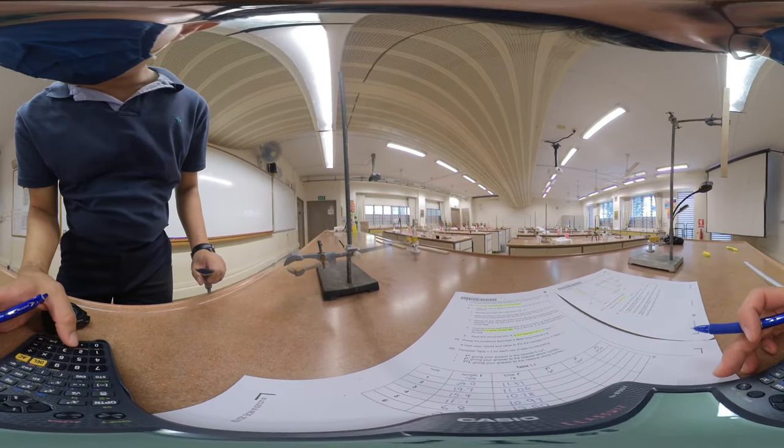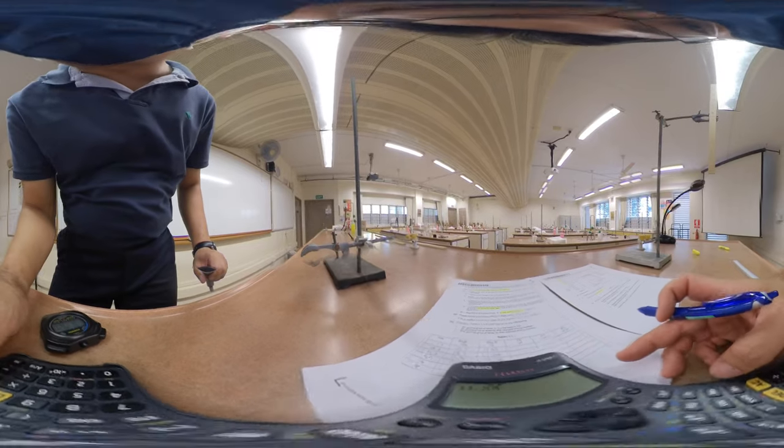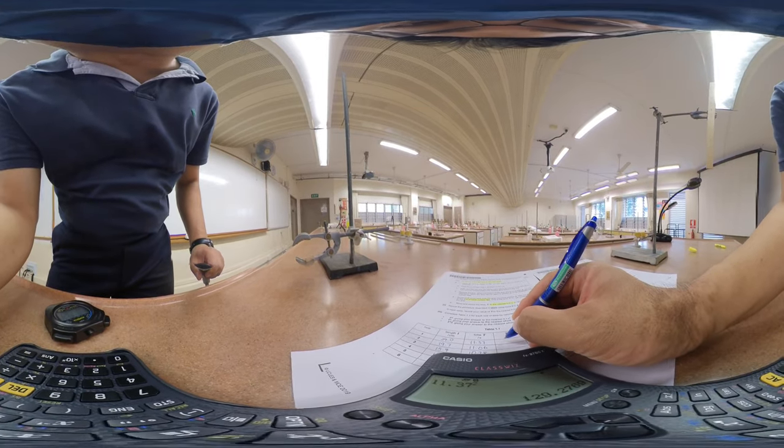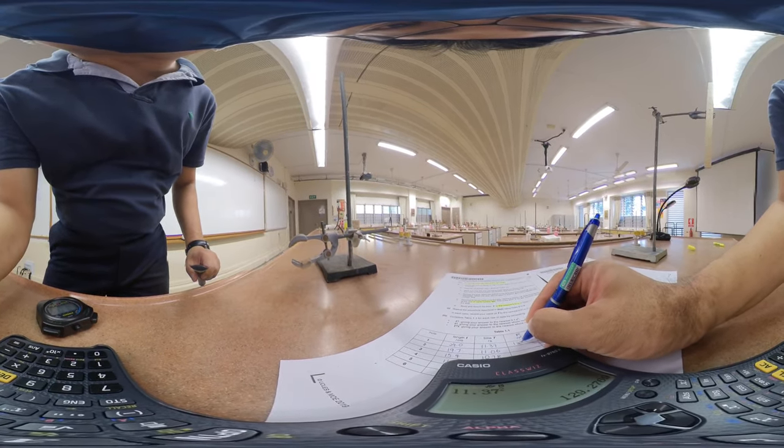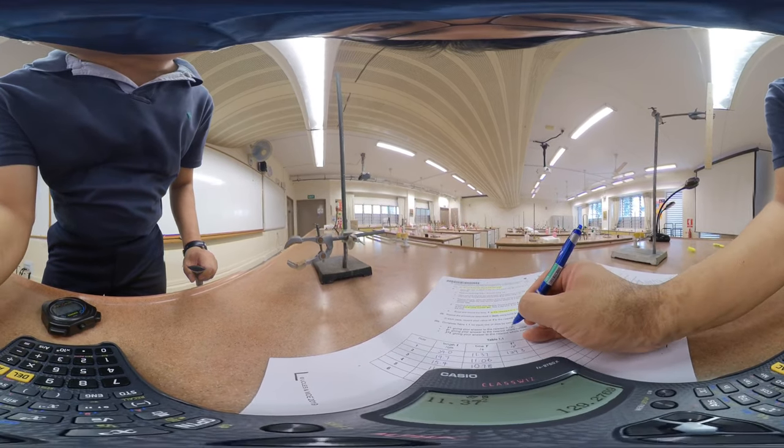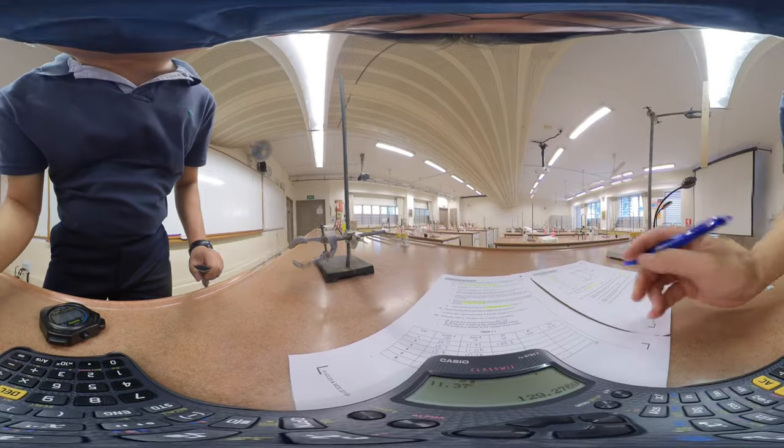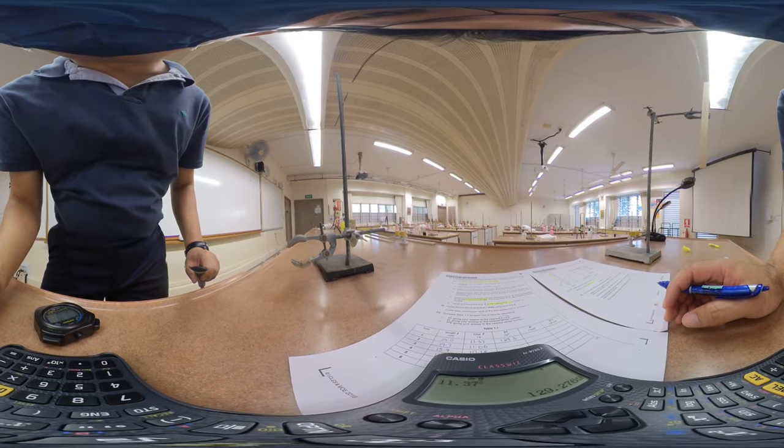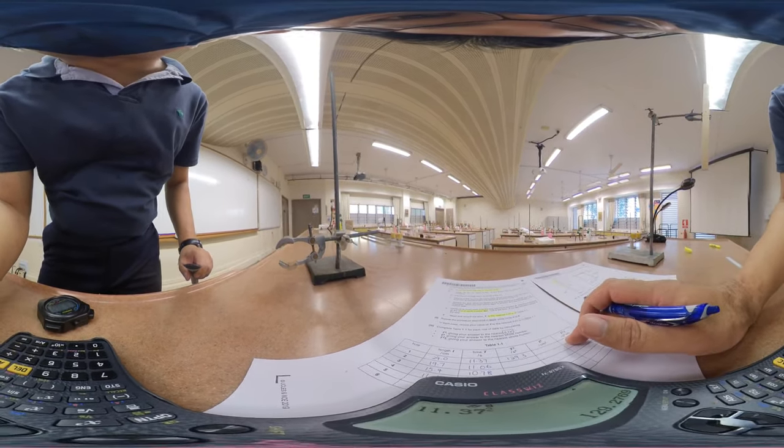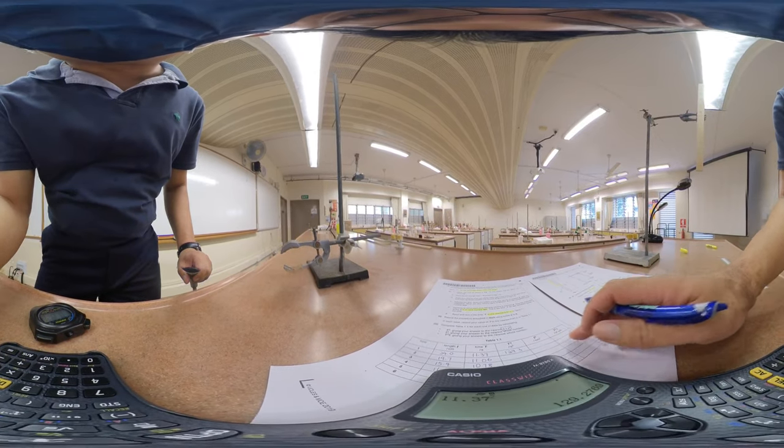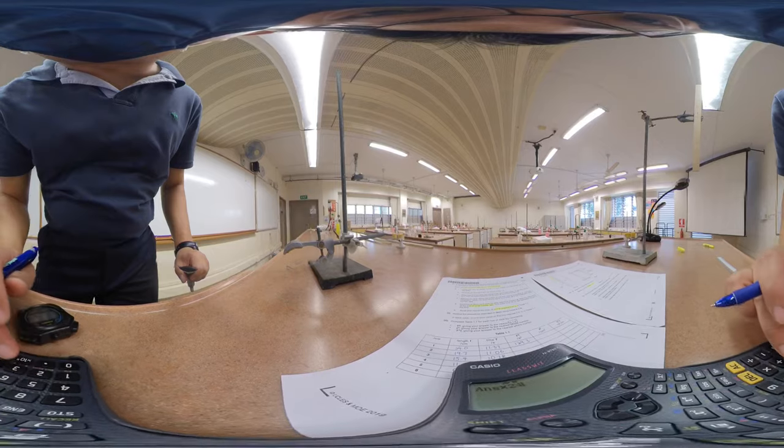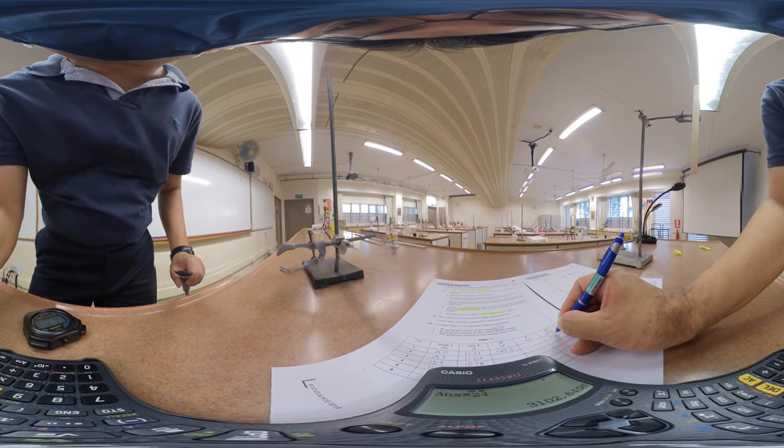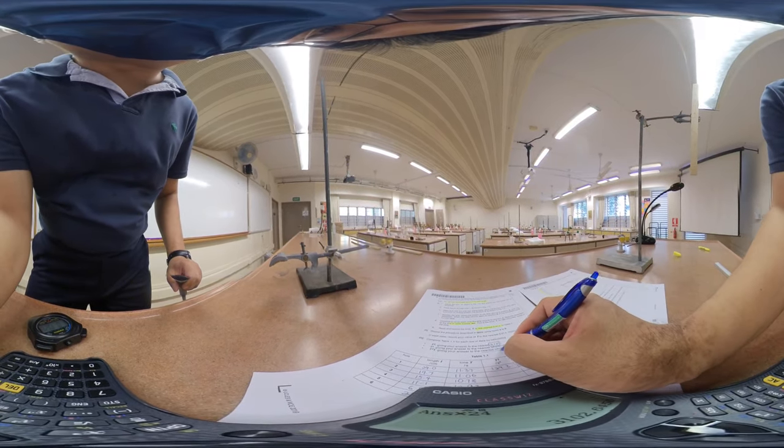So if I have time 11.37, I square it. It gives me 129.3. Supposed to record it to 0.1 seconds. Now, I shouldn't stop here. Continue filling in the blanks. So T squared, I want to multiply by L. Multiply by 24. My answer will be 3103 to the nearest whole number.